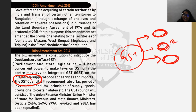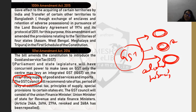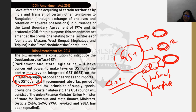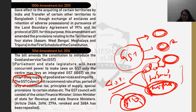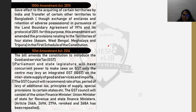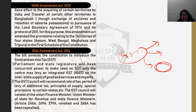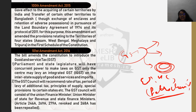Sin taxes are levied on items whose consumption you want to discourage by making them proportionally expensive. For example, the government doesn't want to promote alcohol or tobacco consumption, so it charges GST of 40% and above on these items. High GST is also charged on luxury status-symbol cars like BMWs, which only the very rich can afford, to reduce inequality. The GST Council also decides which sectors remain outside the ambit of taxation, such as education, healthcare, and petroleum products.